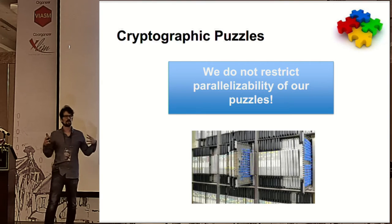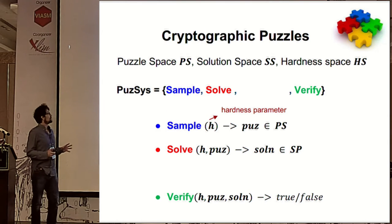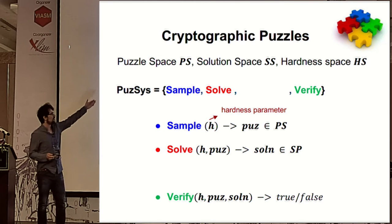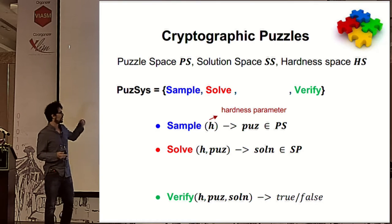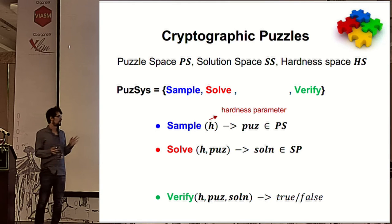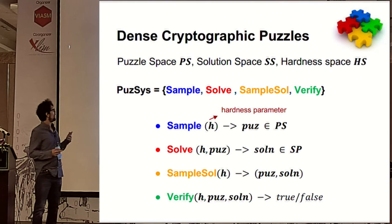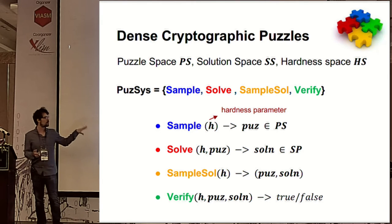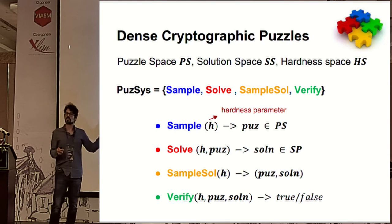When we talk about proof of work here, we don't restrict parallelizability, since we are talking generally about computational resources. Formally, a puzzle system has three standard algorithms: a Sampler taking a hardness parameter h and outputting a puzzle; a Solver taking the parameter and puzzle and outputting a solution; and a Verifier checking if a puzzle-solution pair is valid. A dense puzzle system additionally has a SampleSol algorithm that outputs a puzzle-solution pair jointly.